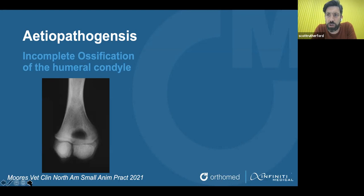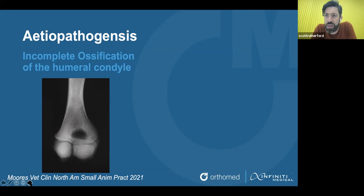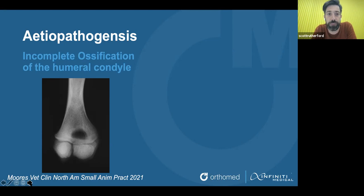One of the first reasons it was questioned was that often we don't see problems related to this fissure — either the fissure itself or a humeral condylar fracture — until the dog is older. So if this has been a problem since the dog was, say, 10 weeks old, why did some cases not present until the dog was 6, 7, 8, or 9 years of age? The second anomaly was that the fissure line just extends to the physis, not all the way to the foramen, as many fissures do. So it didn't make sense that it was just incomplete ossification of this region.